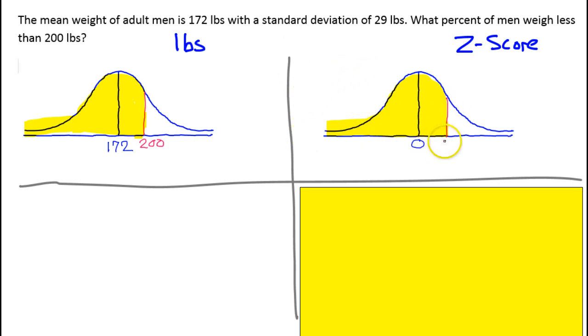Now, we need to find the Z-score for 200 pounds in this scenario. We will use the formula that looks like this. We can find the Z-score by taking any value, subtracting the mean, and dividing by the standard deviation. In this case, that would be 200 minus 172, divided by 29.